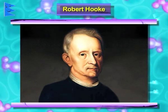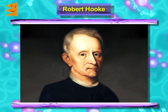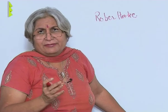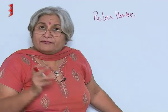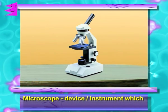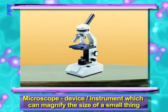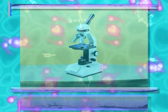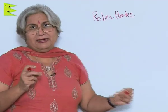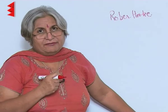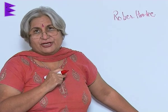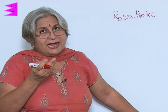This fellow made a slice of cork and saw it under a microscope. At that time there were no great microscopes like we have today. What is a microscope? A microscope is a device or instrument which can magnify the size of a small thing — that is why the word 'micro'. Before that we used to have hand lenses that also magnified but only to some extent. And then there was this crude microscope under which Robert Hooke for the first time saw a slice of cork.